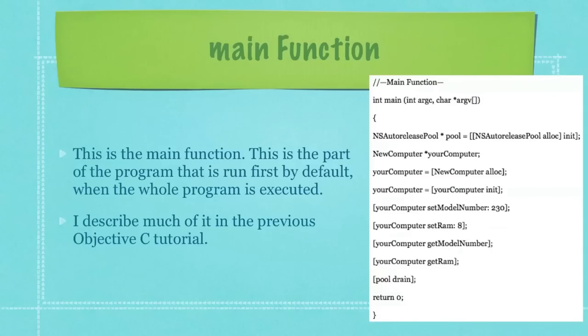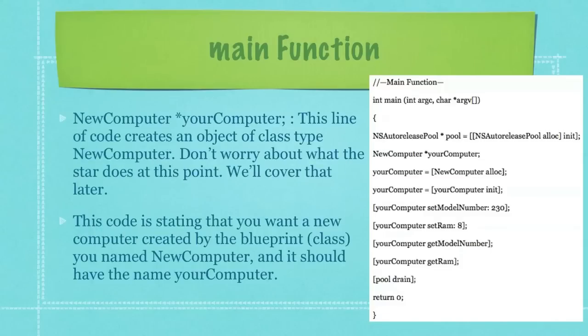You can see here on the right the main function. This is the part of the program that is run first by default when the whole program is executed. I described much of it in the previous Objective-C tutorial. So if this doesn't make any sense, take a look back there.